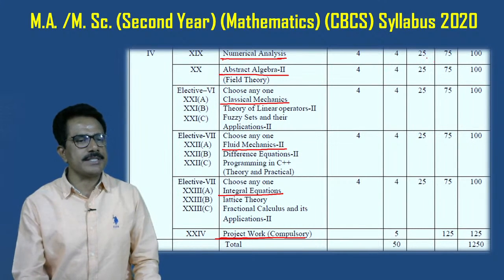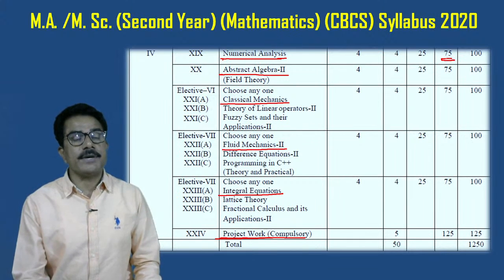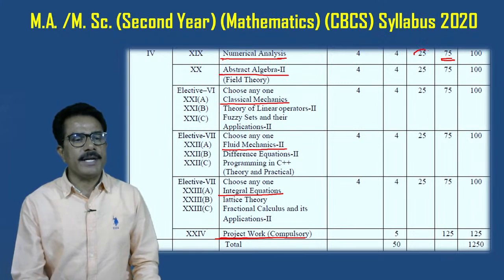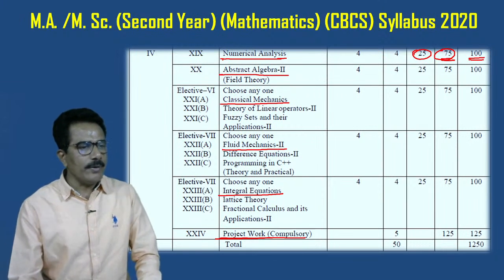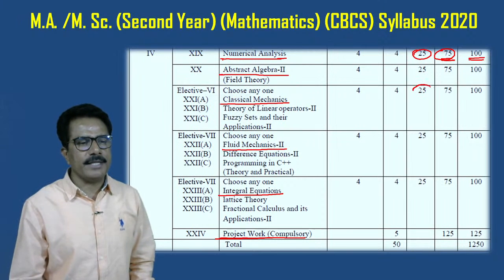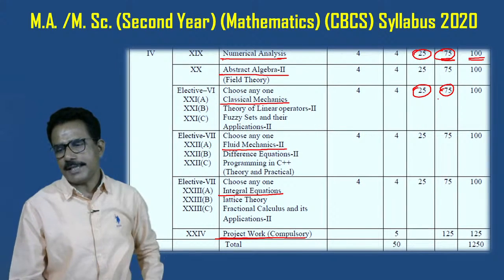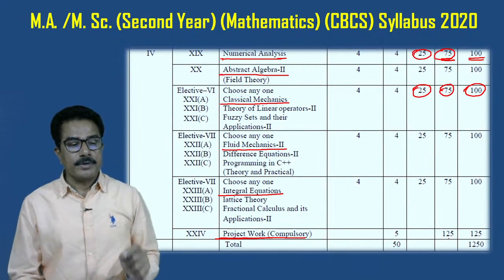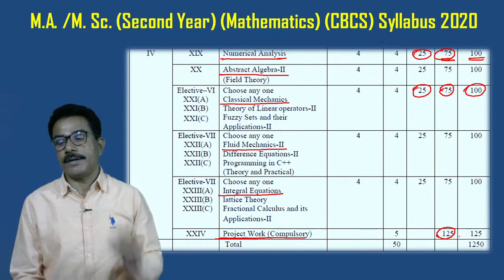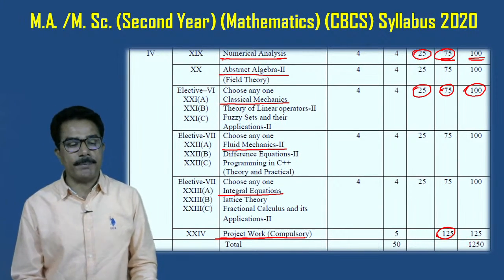In numerical analysis it has four lectures, for 75 marks for university assessment and 25 marks for internal assessment, total 100 marks. In classical mechanics also there are 25 marks for internal, 75 marks for external or university examination, total 100 marks. For the project you have to prepare 125 marks — 100 marks for project and 25 marks for presentation.